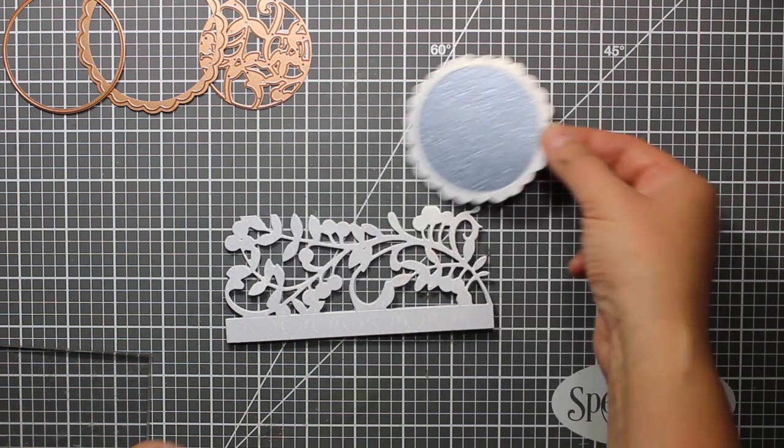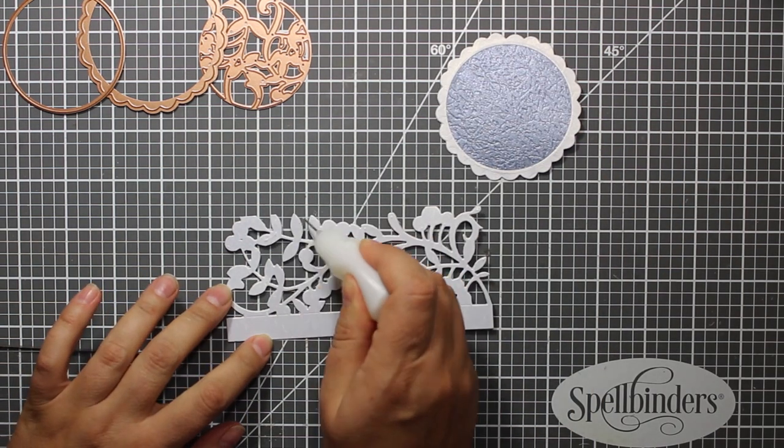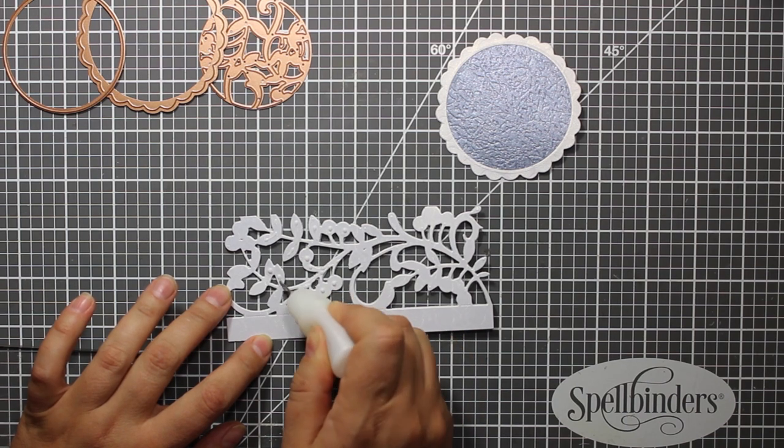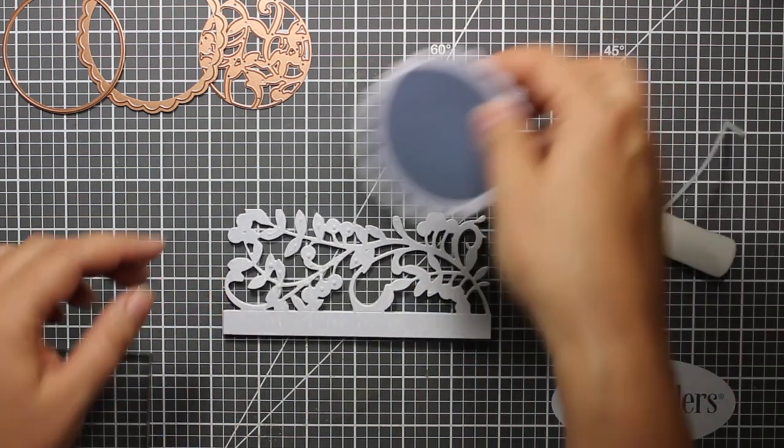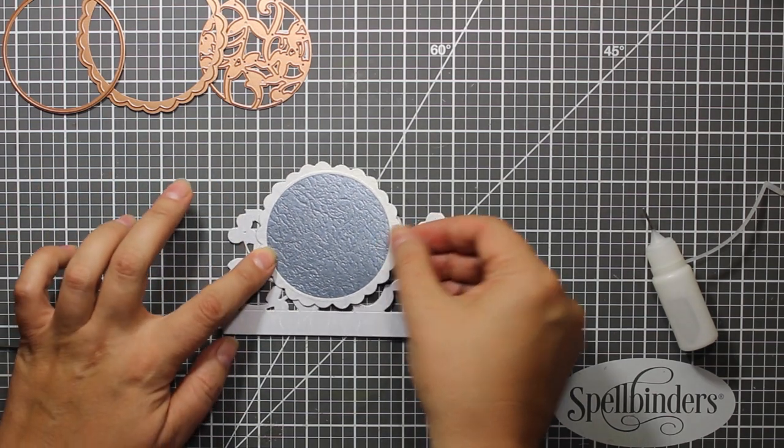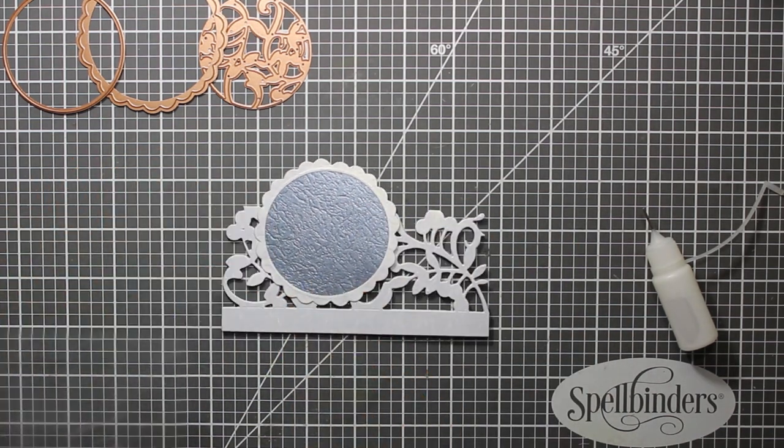Then I'll be attaching the circle to the card. You can place it in the middle but I think it looks better when shifted to the left. I'm applying a bit of liquid glue to where the circle is supposed to go and then I'm placing it on top.